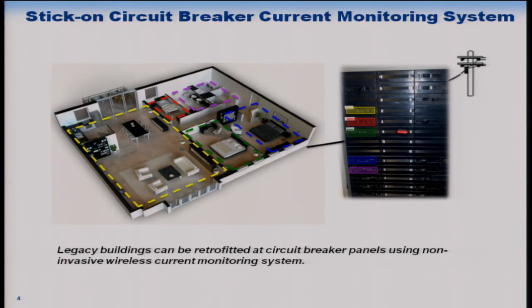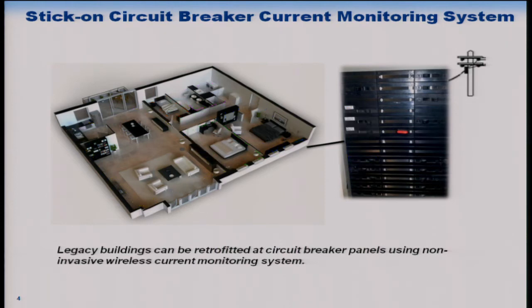We found that circuit breaker panels are an ideal location to place sensors, because all electricity from the grid passes through them. It's a very centralized and accessible location. For each breaker, you have a well-defined area, which gives you a better understanding of energy consumption through metering at the circuit breaker level. The goal is to put sensors onto these panels, integrated with radios, to measure the current flowing through each breaker.